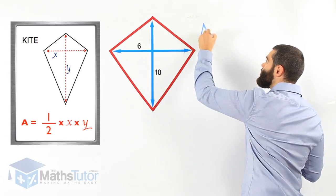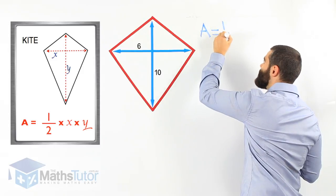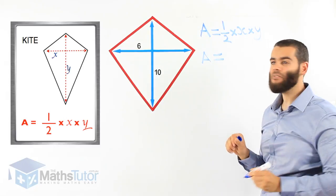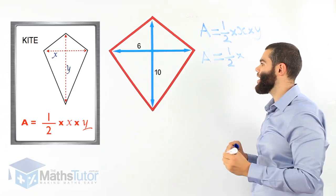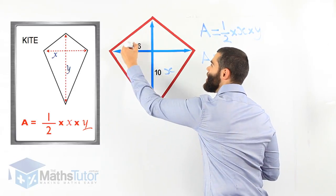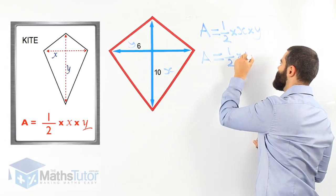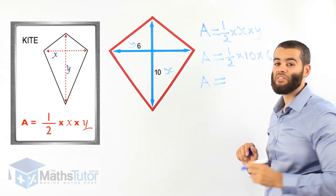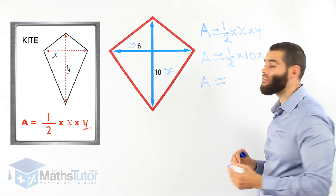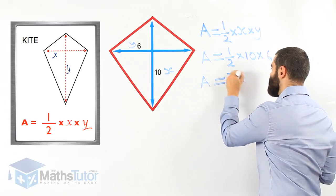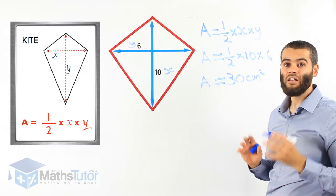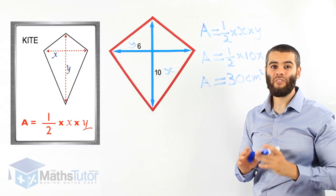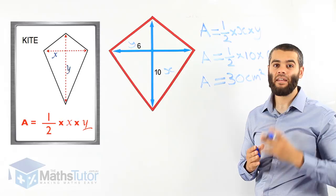Area equals half times x times y. Let's say this diagonal is x and this one is y — x is ten and y is six. Half times ten times six: ten times six is sixty, and half of sixty is thirty. The measurements are in centimetres, so the area of the kite is thirty square centimetres. Always remember the formula half times x times y is the area of the kite and the area of the rhombus.